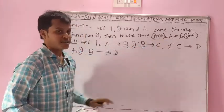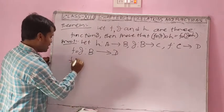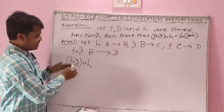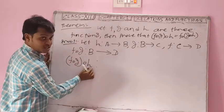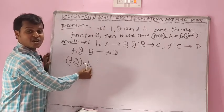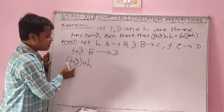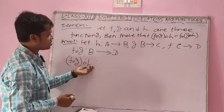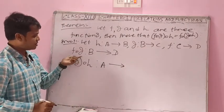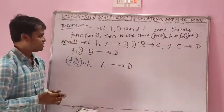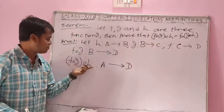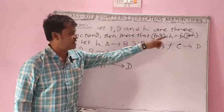Now take the composition of f∘g with h. For (f∘g)∘h, the domain equals the domain of the second function h, which is A, and the codomain equals the codomain of the first function f∘g, which is D. So (f∘g)∘h goes from A to D.